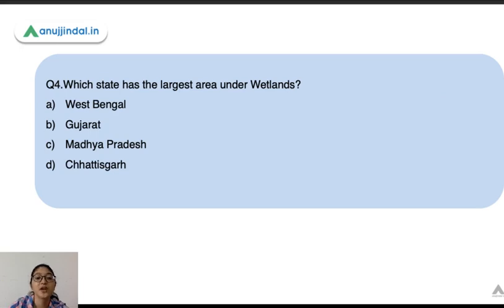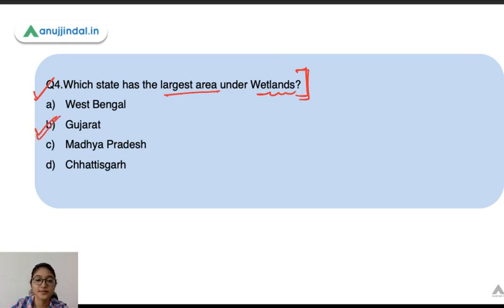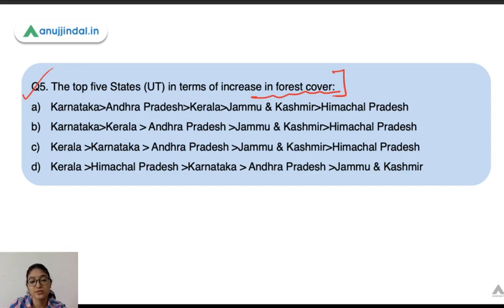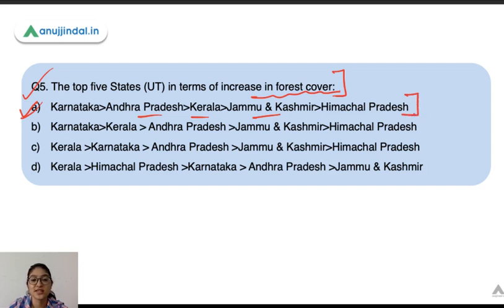Question 4: which state has the largest area under wetlands? The answer is Gujarat. Question 5: the top 5 states in terms of increase in forest cover are Karnataka, followed by Andhra Pradesh, Kerala, Jammu and Kashmir, and Himachal Pradesh — and the first option is the correct sequence.